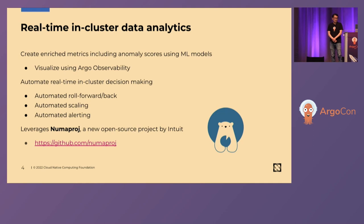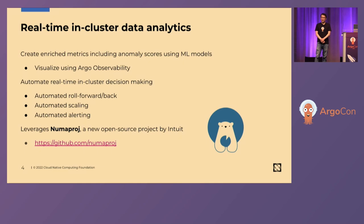With real-time in-cluster data analytics, when you have metrics you can see, you also need to be able to analyze and enrich those metrics. At Intuit, for example, we compute anomaly scores on all of these metrics, which automatically indicates if an application's health is bad. Furthermore, once you have a single anomaly score, you can use that with Argo Rollouts to automatically roll back your applications and fully automate the lifecycle management of deployment in your cluster.